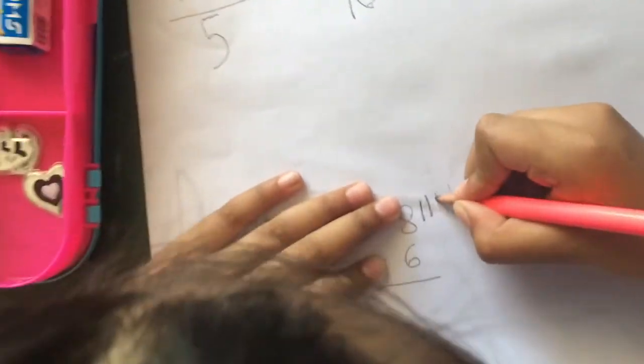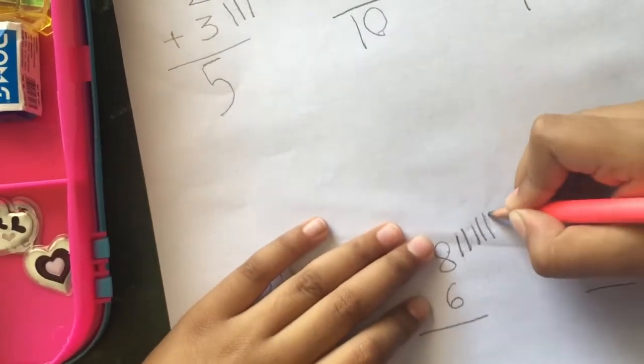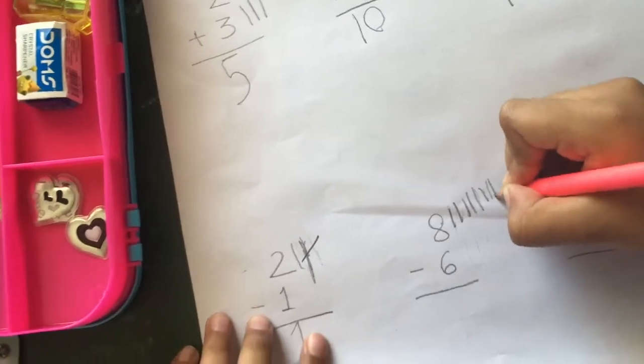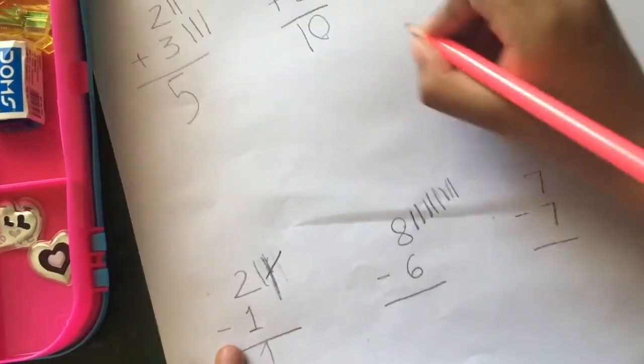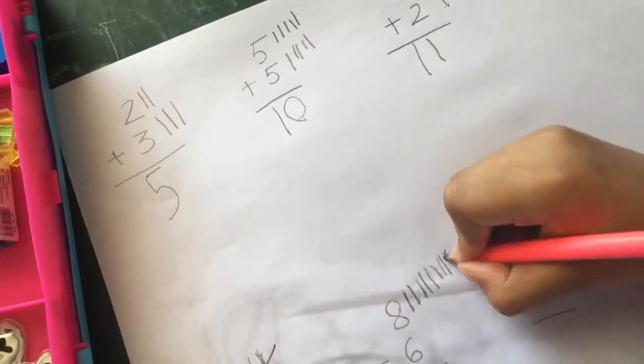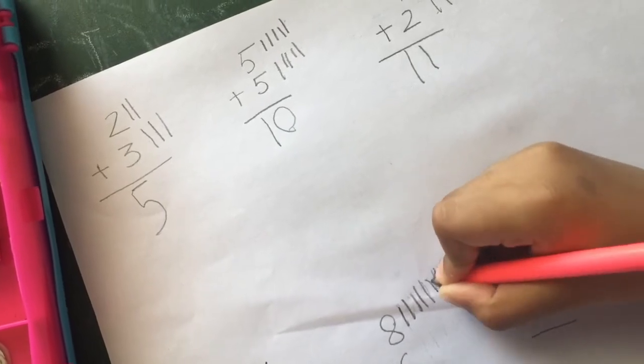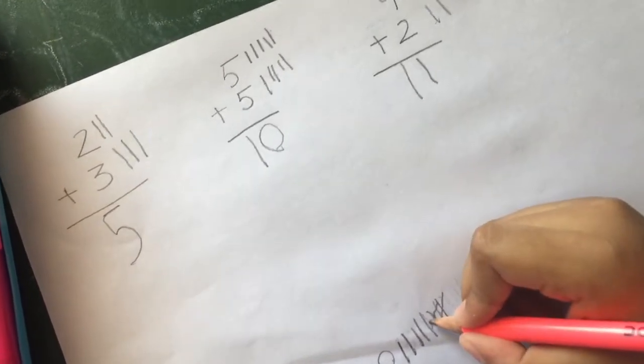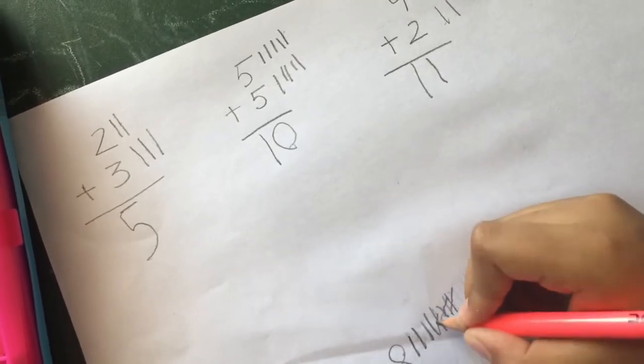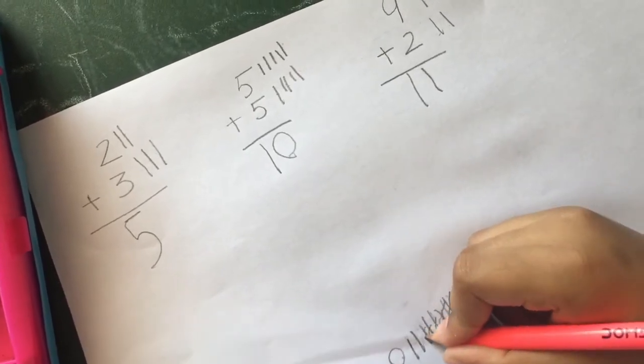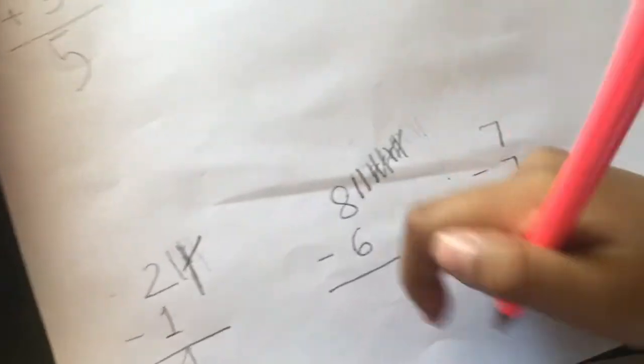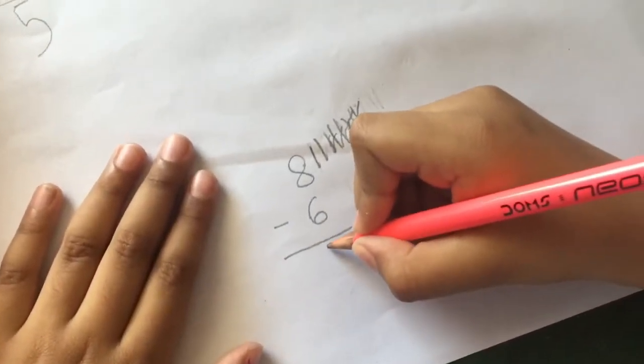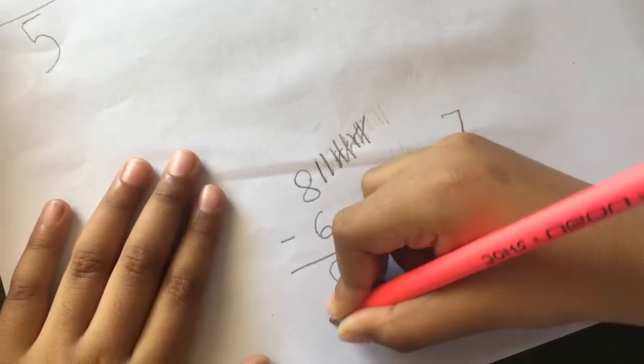So 1, 2, 3, 4, 5, 6, 7, 8. And now we have to cut 6. 1, 2, 3, 4, 5, 6. So many remaining 2. Yes, the answer is 2. So we have to write 2.